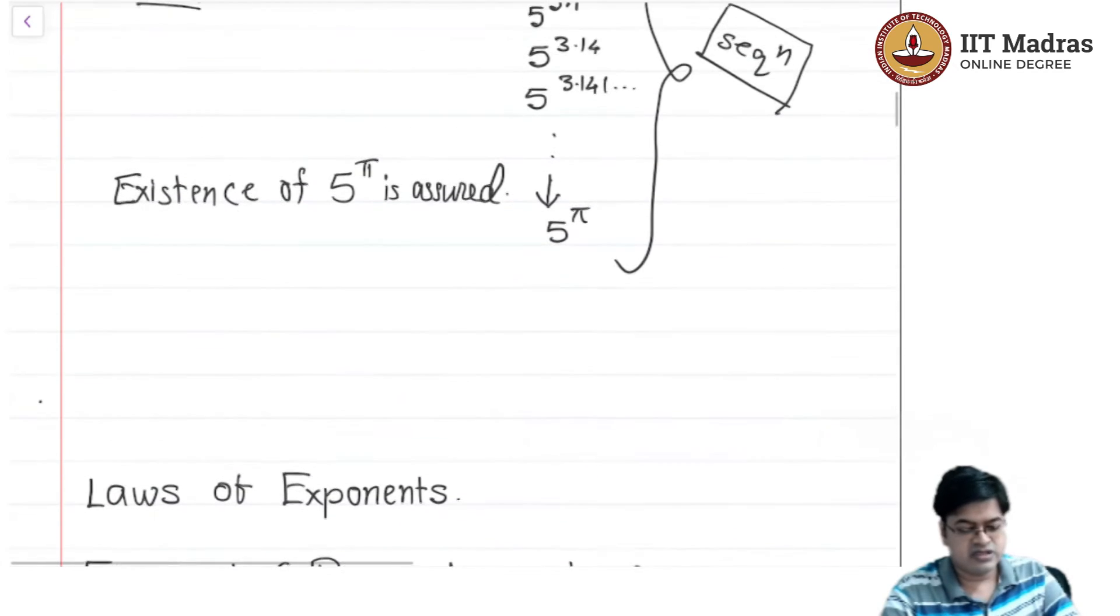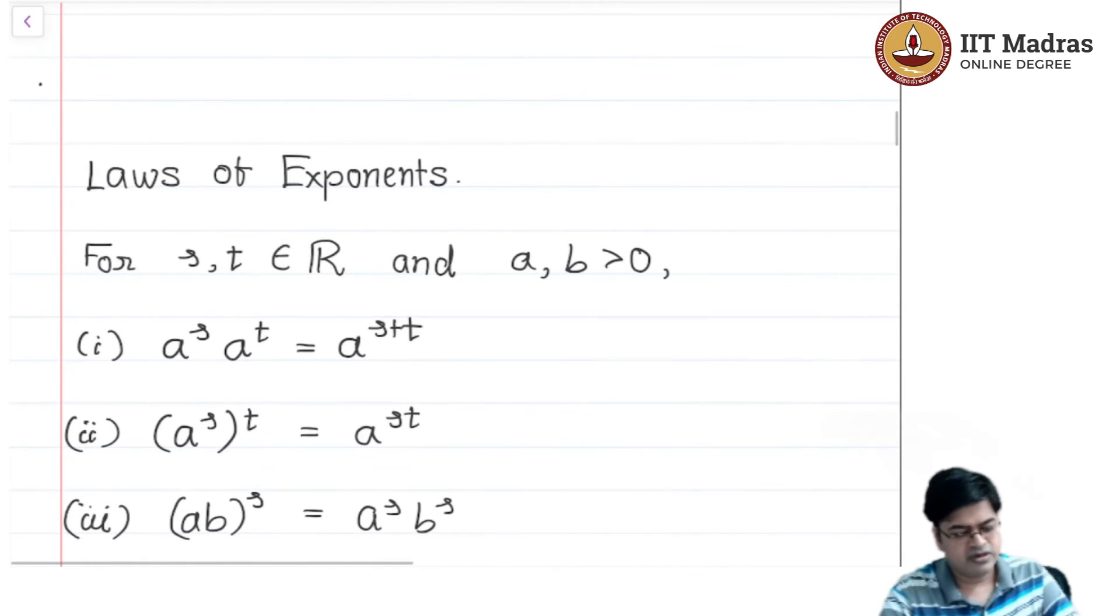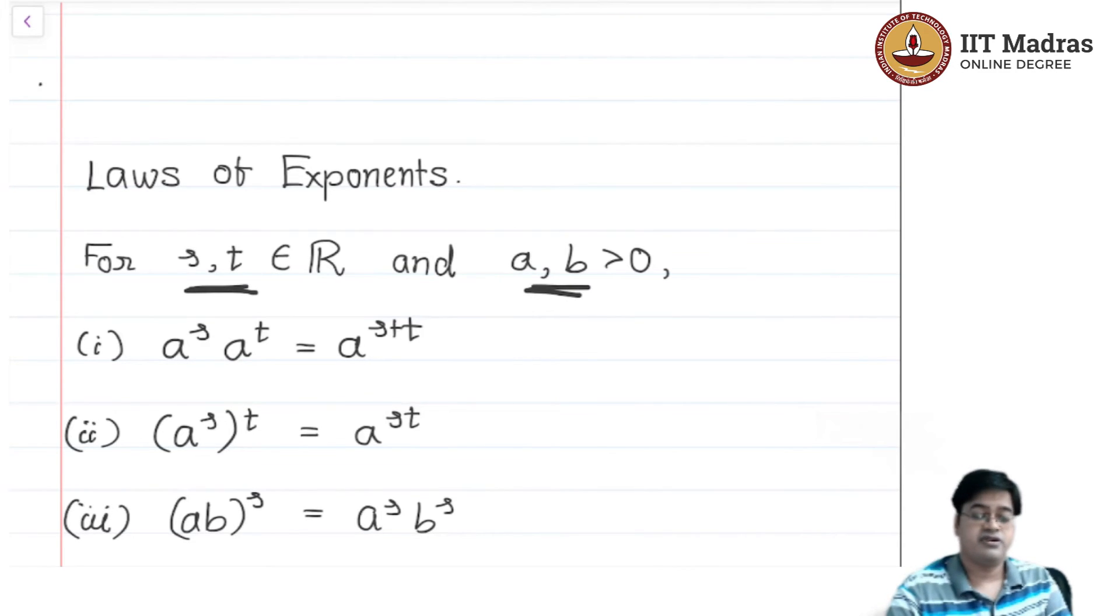Now let us recall all these laws you already know, simple laws of exponents. Earlier we knew the laws of exponents for only rational numbers. Now we are talking about real numbers. s and t are real numbers, a and b are greater than 0. s and t will play a role of exponents, a and b will play a role of bases. Then it is very easy to prove a raised to s times a raised to t is a raised to s plus t.